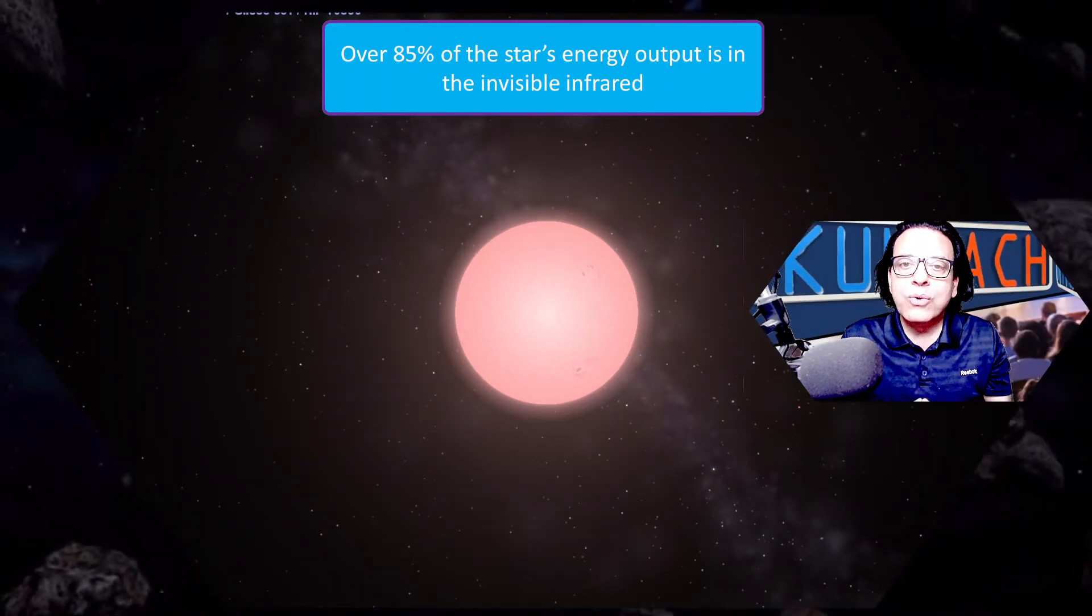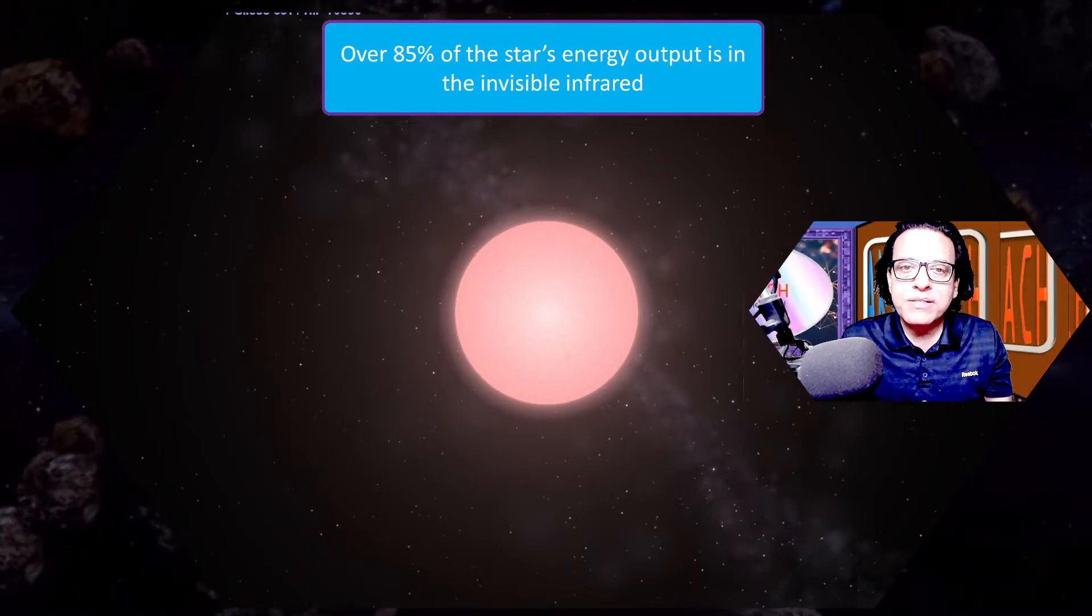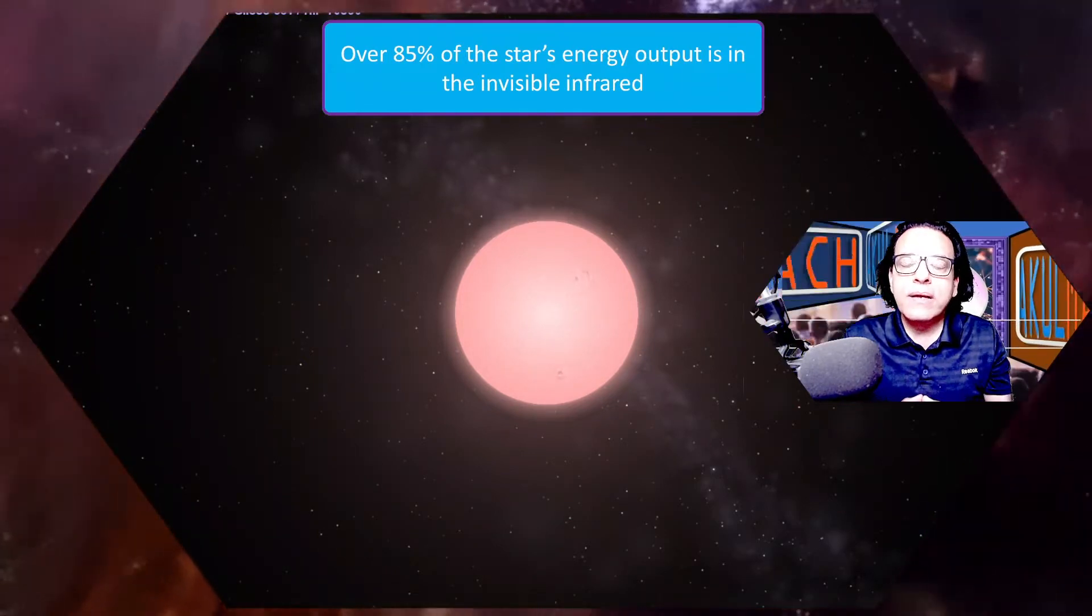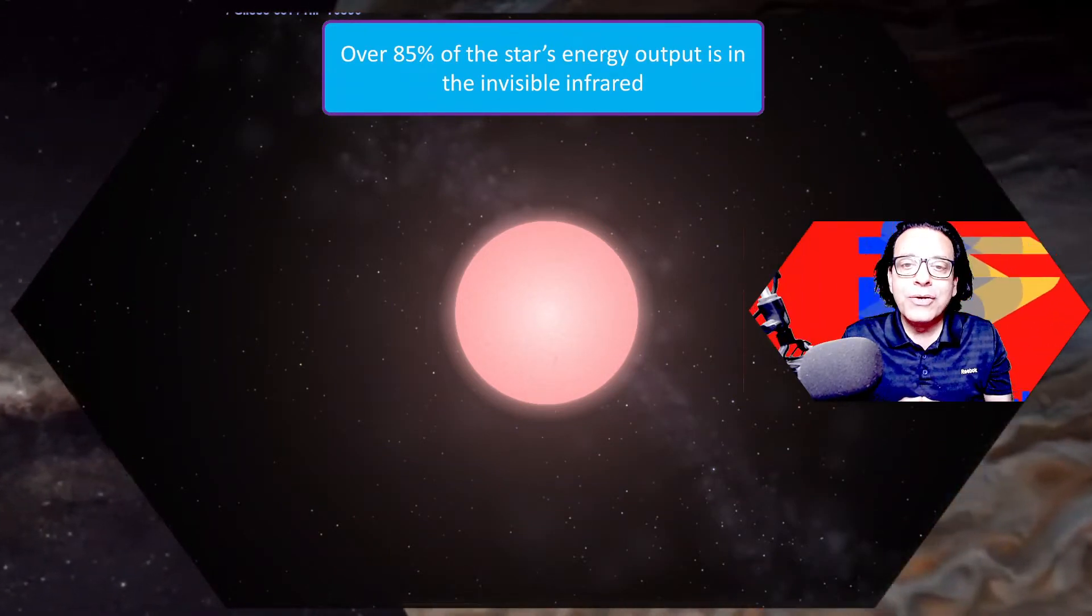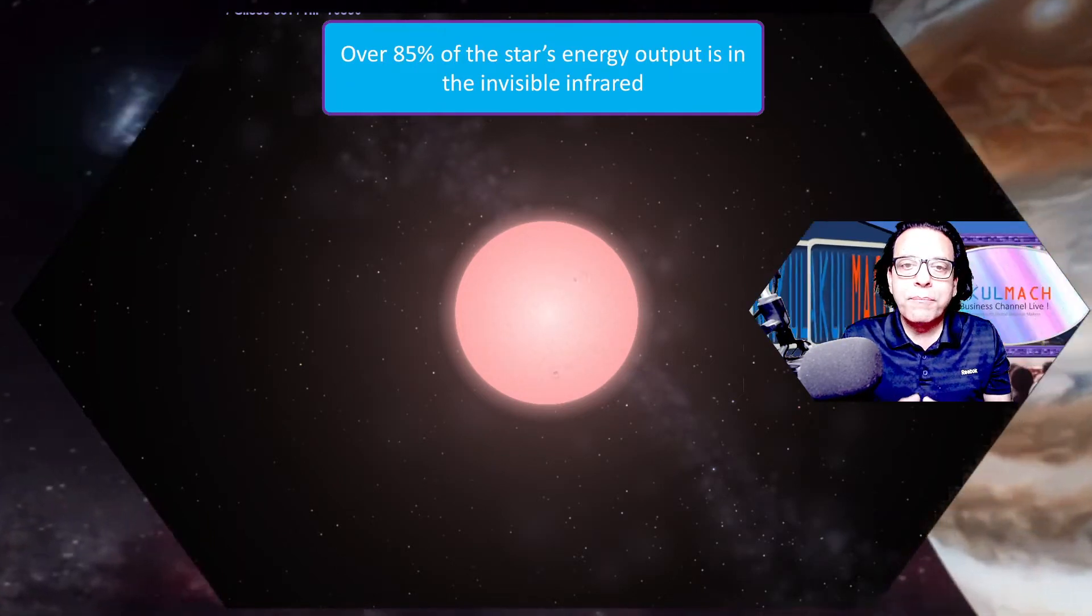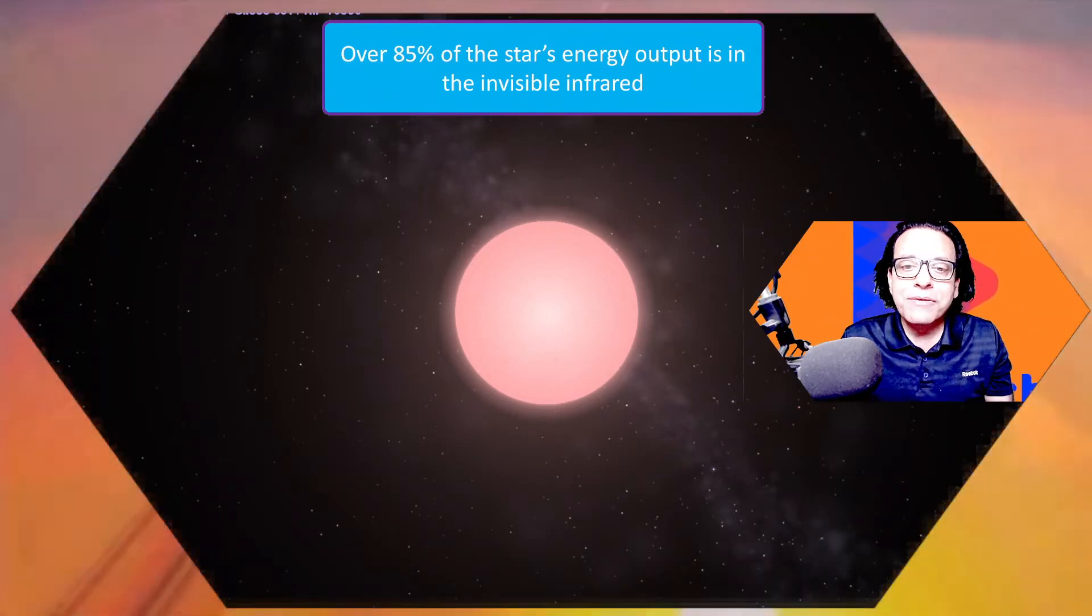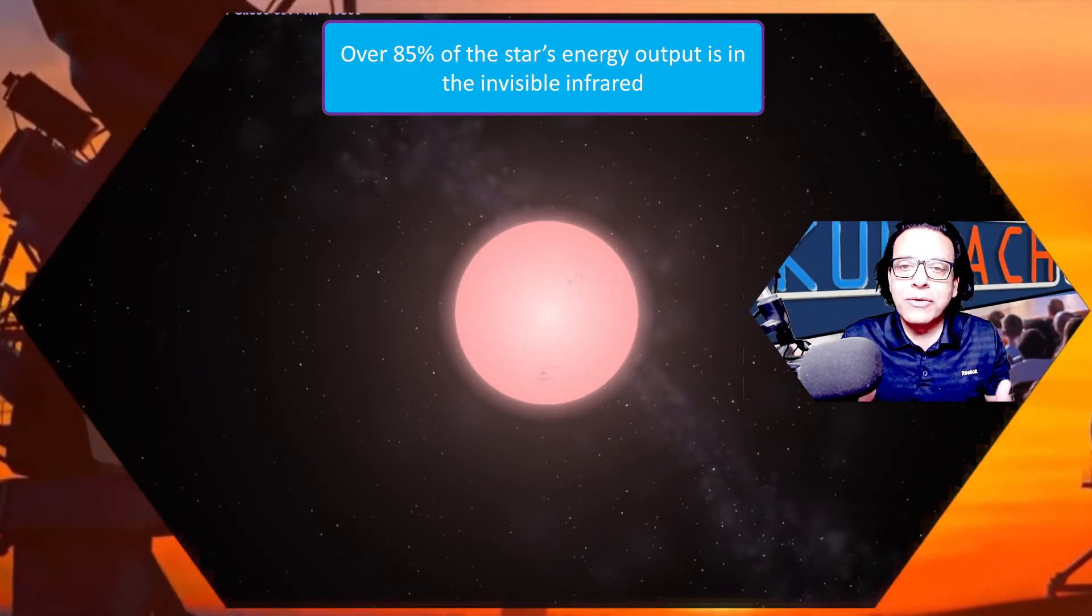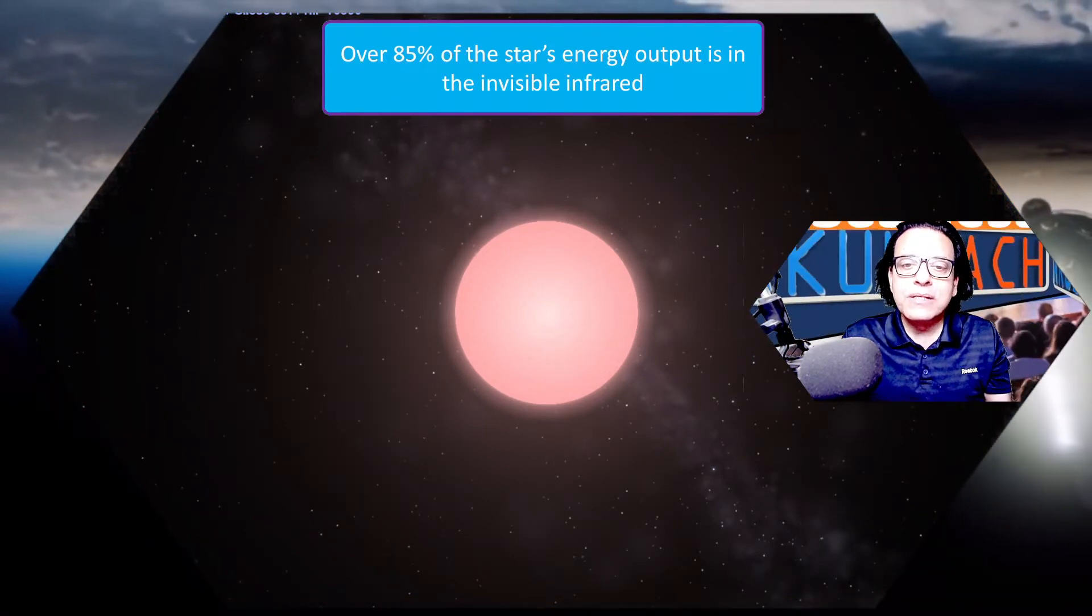The red dwarf star emits most of the light in the infrared, and from our perspective, this light is not visible to humans. Even though we are able to see this pink color emanating from Proxima Centauri, there is still 85% of the energy we will not be able to see using the naked eyes. We need instruments to see what kind of energy Proxima Centauri is emitting.